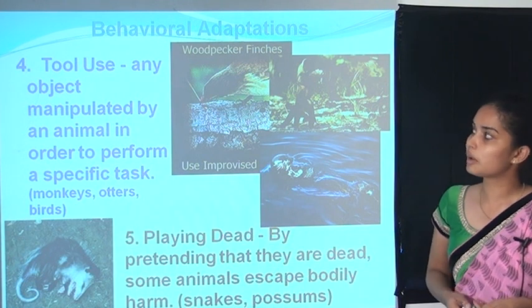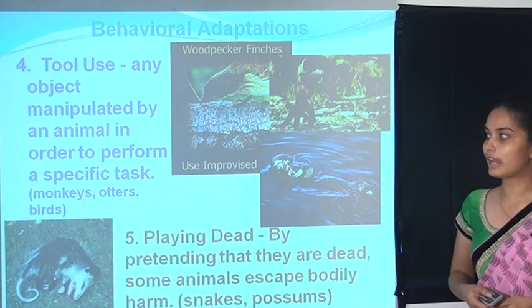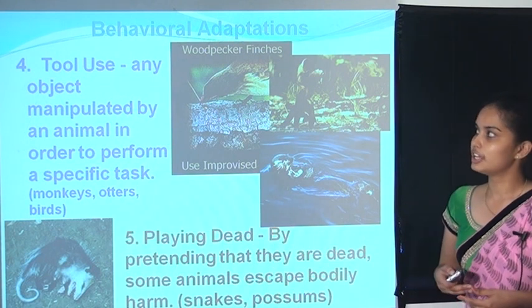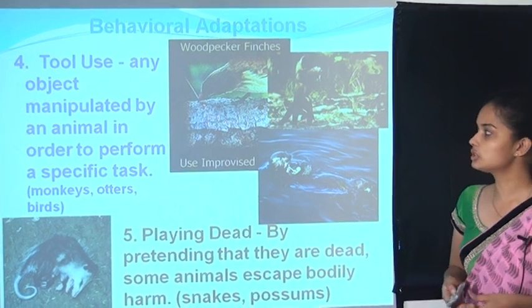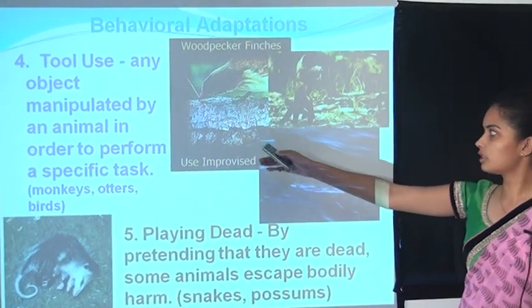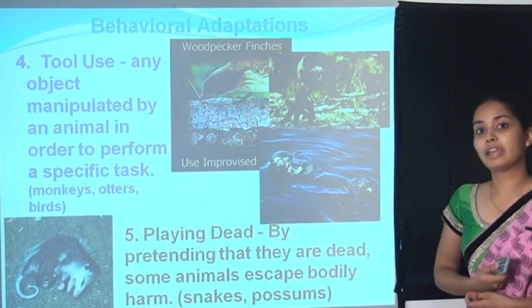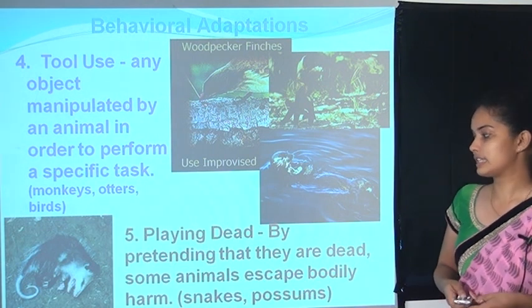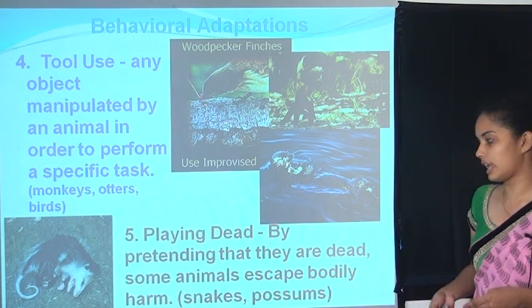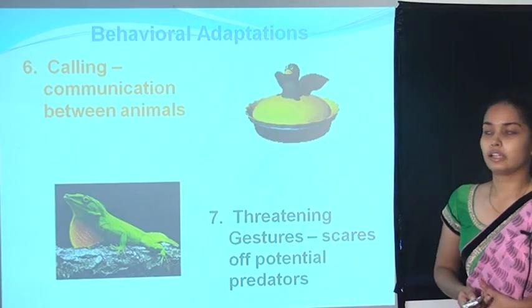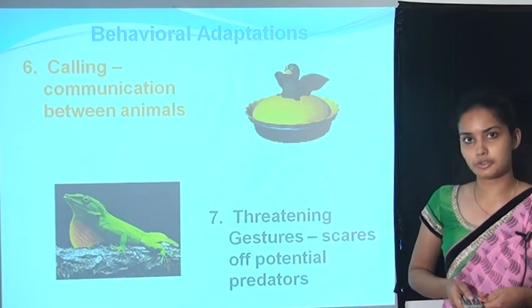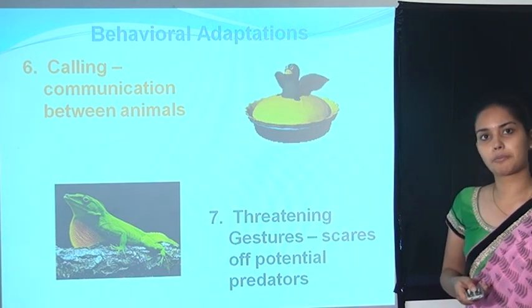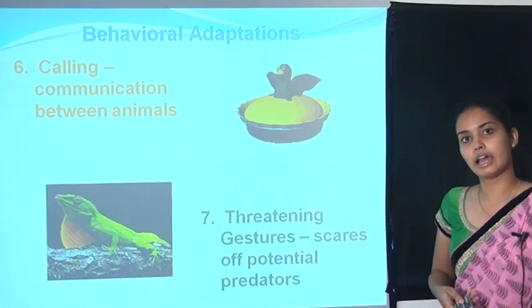The fourth behavioural adaptation is tool use: any object manipulated by an animal to perform a specific task. For example, some animals use simple tools to make nests. Playing dead: many animals act as if they are dead; by pretending to be dead, some animals escape bodily harm from snakes and other predators. Calling: communication between animals is used as a behavioural adaptation, with threatening gestures that scare potential predators — some snakes threaten predators this way.